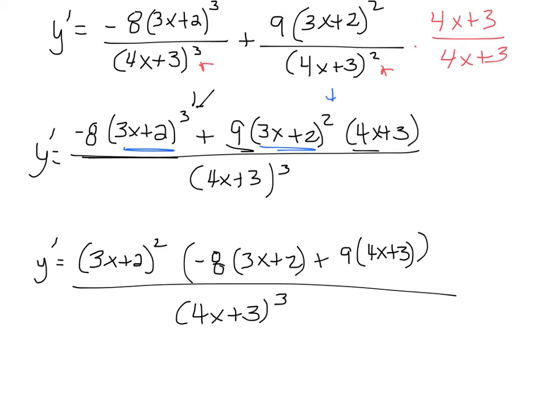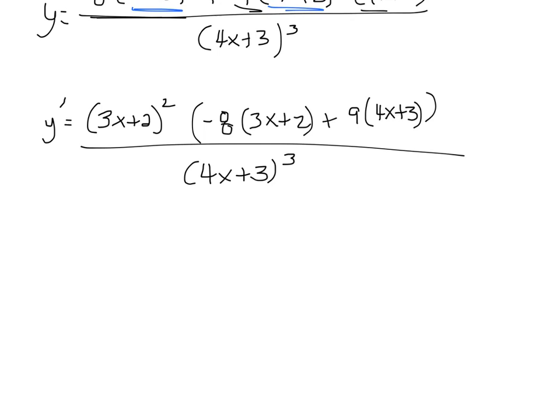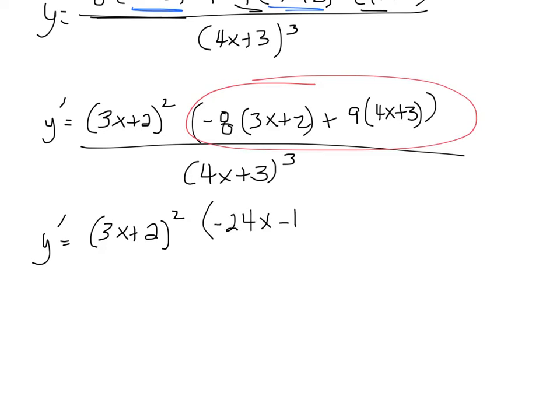cubed. Now I can simply simplify this. I'll leave the (3x plus 2)² alone. This is going to equal negative 24x minus 16 plus 36x plus 27, just simplify these, all over (4x plus 3)